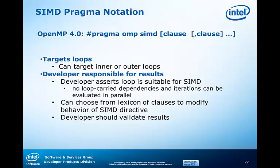The developer asserts to the compiler that the following loop is suitable for vectorization. This means if the loop contains reductions, the developer must specify them. If induction variables are used, the developer specifies this. If variables are private to each lane, this is specified to the compiler as well. Pragma OMP SIMD is similar to the OpenMP Parallel 4 in that the developer is asserting that the loop is suitable for vectorization, just as she is asserting that the loop is suitable for threading when she uses pragma OMP 4. Just as in the case for explicit parallelization using pragma OMP 4, the developer must validate that the results are correct.